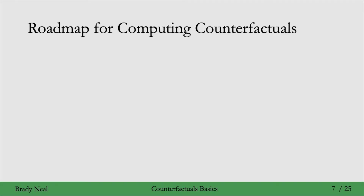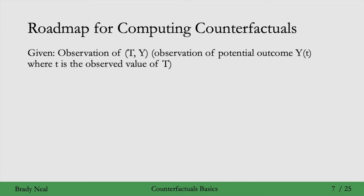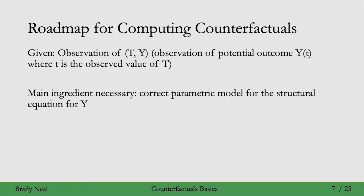So that's a bit about what counterfactuals are, and now I'll give you a very quick roadmap for how we're going to compute these counterfactuals — how we're going to get around the fundamental problem of causal inference. The first thing is we'll have to observe some data. For a specific person, we observe the treatment and outcome that they had. This corresponds to observing the treatment and the potential outcome y_t, where little t is the specific observed value of big T — this is by consistency. Then the main ingredient we'll need is a parametric model for the structural equation for y. We'll only be able to get the correct counterfactual if we have a correct parametric model for this structural equation for y, and this is a pretty big ask.